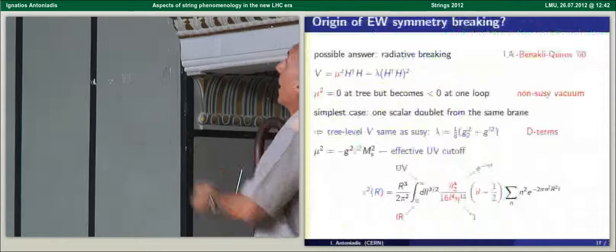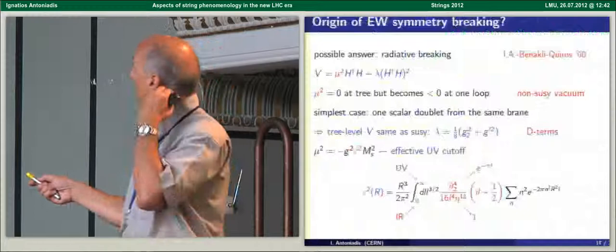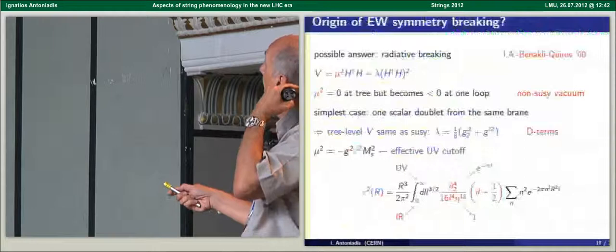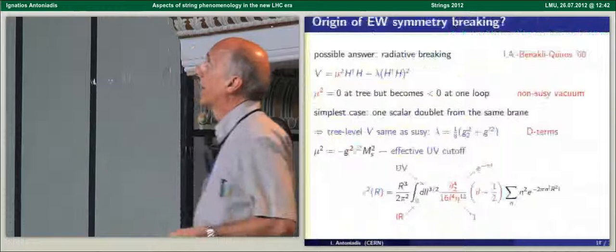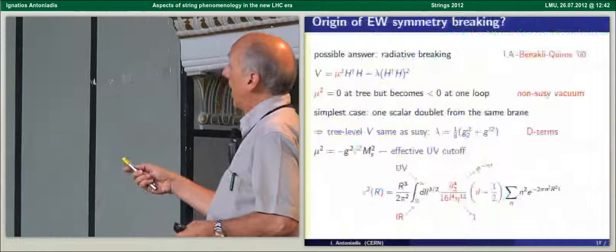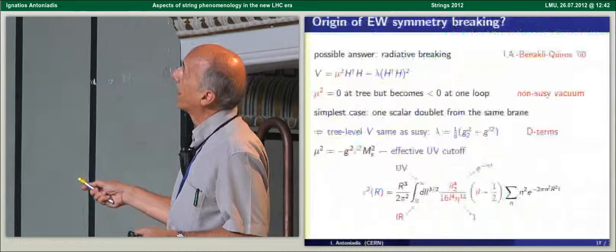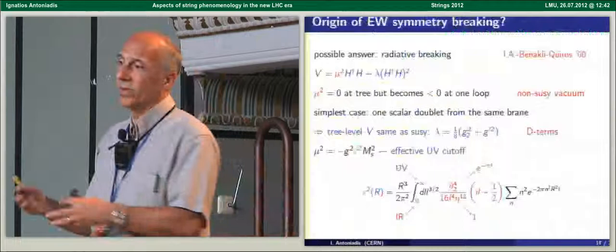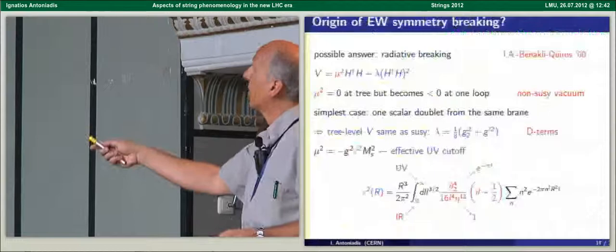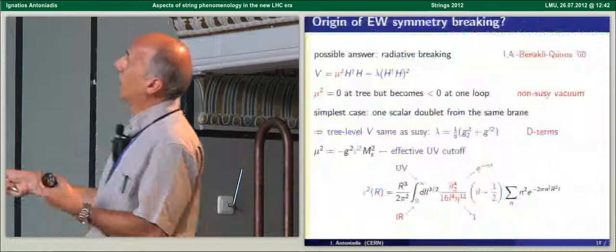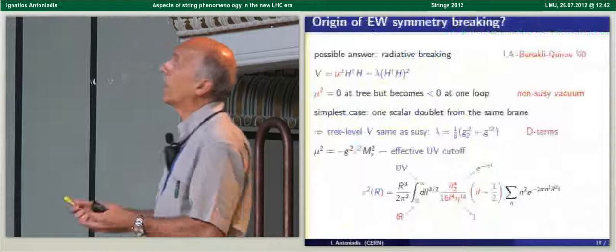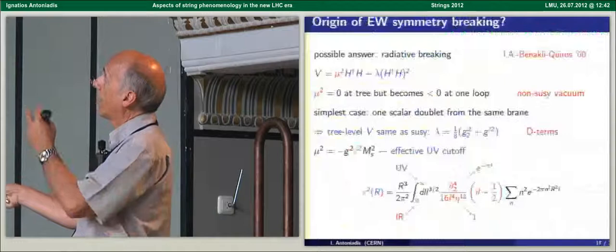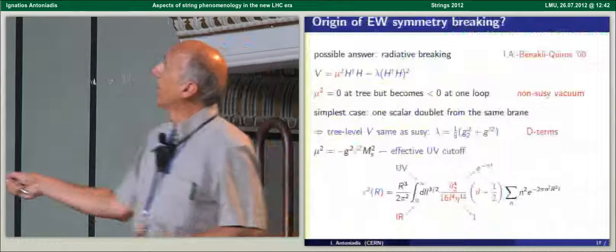But as I will show in a moment this could become even better. The main ingredients for low string scale is that we need large extra dimensions with a volume which is large 10^32 in terms of string scale. Such large volumes can be obtained by moduli stabilization as it has been shown by several groups. And the other ingredient is that the string coupling is perturbative. Everything seems to be perturbative until now so it could be that the string scale is low and this coupling is perturbative.